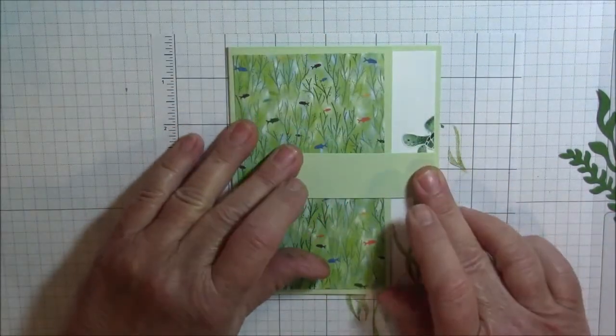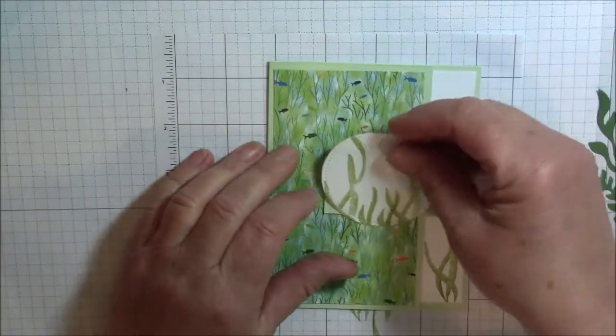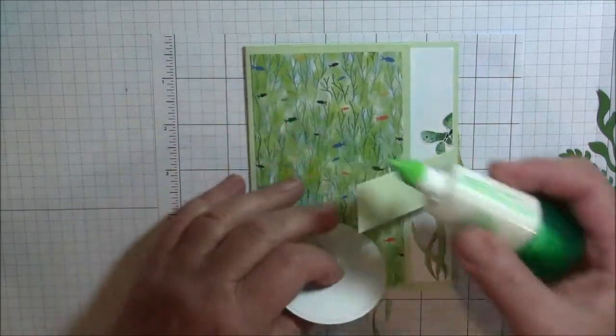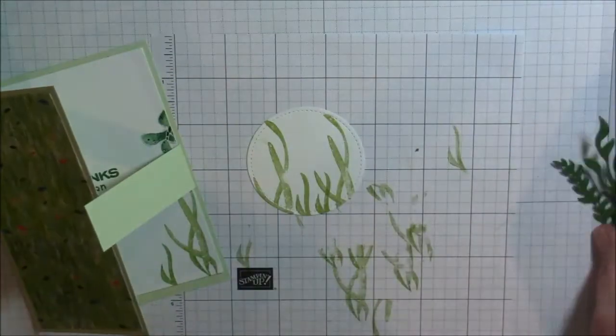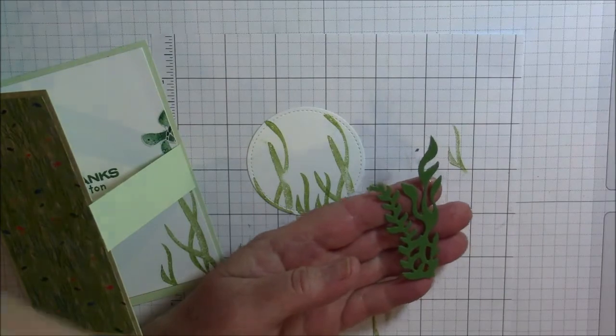Now we are going to finish the front. We are going to attach this onto our little flap here. We have our die cut and this is way too big for the front of this card. So we are going to be trimming this off.